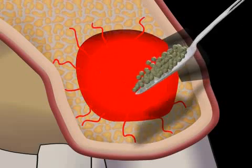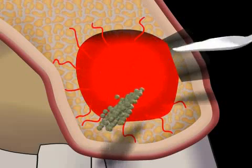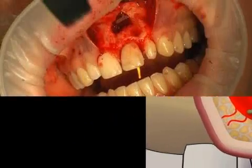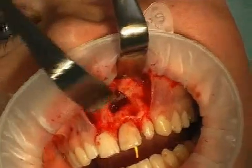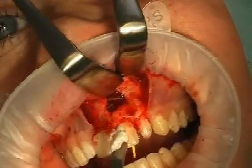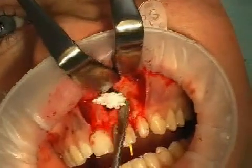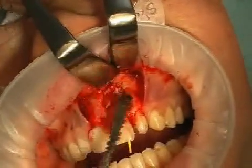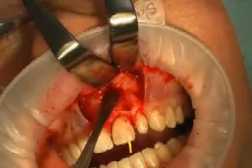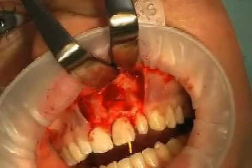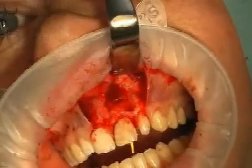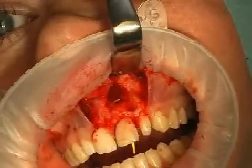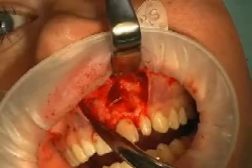To avoid this problem, an attempt can be made to stabilize the coagulate and impede its contraction — for example, by filling up the empty space with a granulate made of materials used to replace bone, as shown here. This keeps the coagulate from contracting. Vessels can grow from the sides of the wound, which is the basis for subsequent bone regeneration.